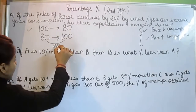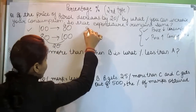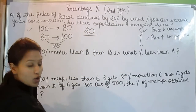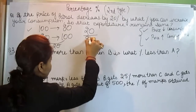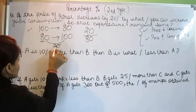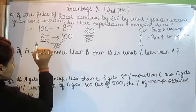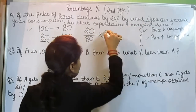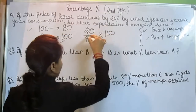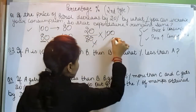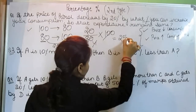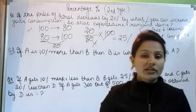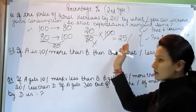See the gap — the gap is 20. This 20 is increased on 80. We have to get the percentage, so 20 on 80 gives us 25 percent as the answer. It means the consumption is increased by 25 percent.